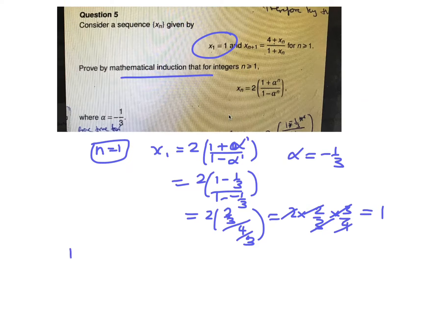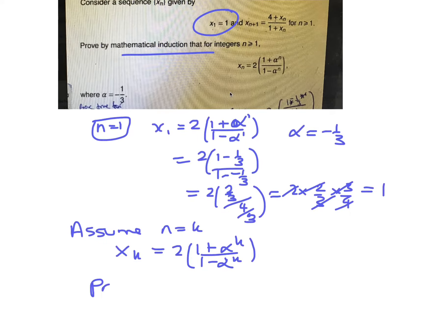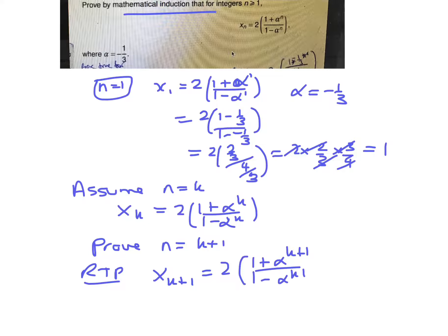Now we're going to assume for n equals k. So we're assuming that xk equals 2 times (1 plus alpha to the k) over (1 minus alpha to the k). And we are going to prove for n equals k plus 1. So we're required to prove that x_(k+1) equals 2 times (1 plus alpha to the k plus 1) over (1 minus alpha to the k plus 1).